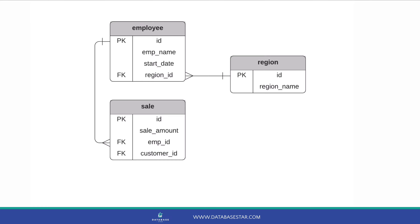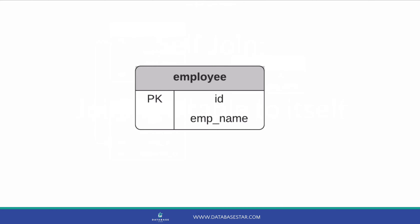In some situations, you may need to get data from the same table more than once. Why would you want to do that? There are two common examples of a table design where self-joins are often used. The first is employees and managers.